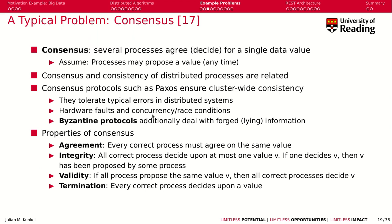In the context of consensus algorithms, you also find the term Byzantine protocols. These protocols allow you to tolerate lying processes — what happens if someone maliciously tries to inject a value which isn't true? Instead of saying 'my age is 35,' they say 10 or 120. Byzantine protocols can tolerate a number of processes that have wrong information.